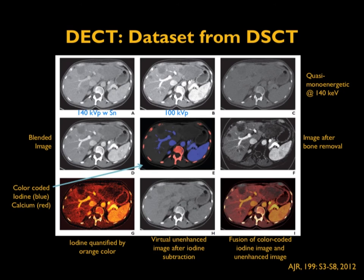You can also have iodine quantified with an orange color, and an enhanced image after iodine subtraction. That application is touted for creating virtual non-contrast images — so in multiphasic studies, one can avoid the non-contrast series entirely. Finally, you can also display a fusion of the color-coded iodine image and the unenhanced image.